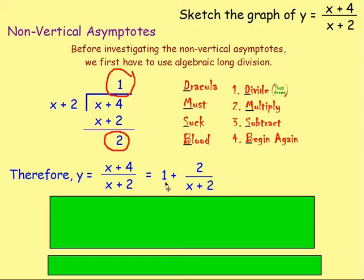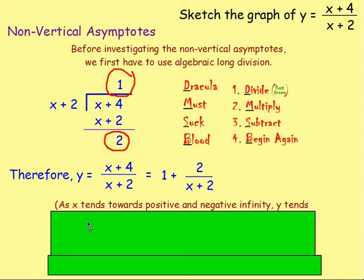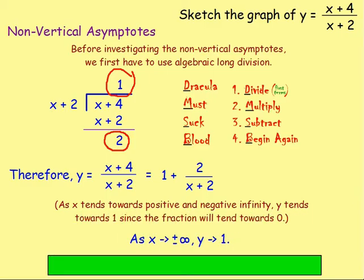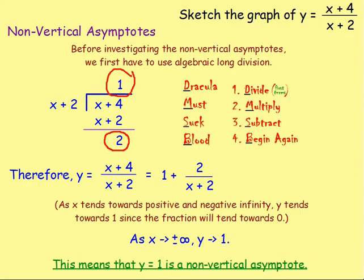We've rewritten it as a polynomial plus a proper rational function. For the non-vertical asymptotes, we look at what happens as X tends towards infinity. As X gets bigger and bigger, we're dividing 2 by a bigger and bigger number, so it tends towards zero. Therefore, as X tends towards positive or negative infinity, Y tends towards just 1. So Y equals 1 is the non-vertical asymptote.